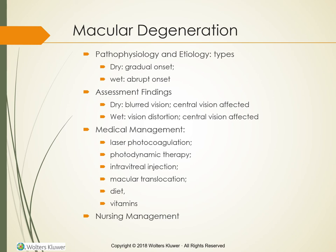Nursing Management: The nurse helps the client cope with loss of vision. Nutrition Notes 42-1: Nutritional therapy to reduce the rate of macular degeneration development includes carotenoids (lutein and zeaxanthin), antioxidants (vitamin C and E), zinc and copper, and fatty acids (EPA and DHA). Sources include dark green leafy vegetables, broccoli, peas, kiwi, red grapes, oranges, corn, mangoes, honeydew melon, oily fish, and flaxseed. The risk of developing macular degeneration can be reduced by as much as half in people who eat spinach or collard greens two to four times per week.